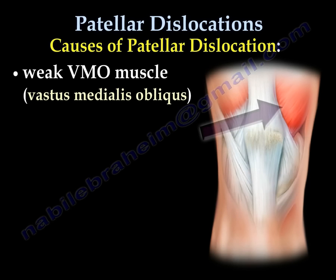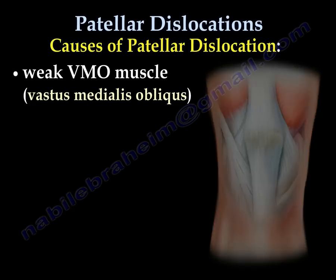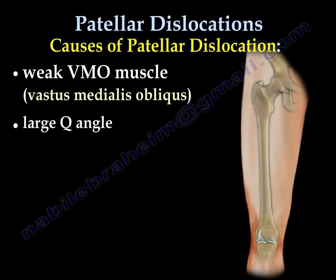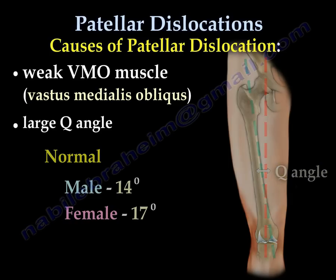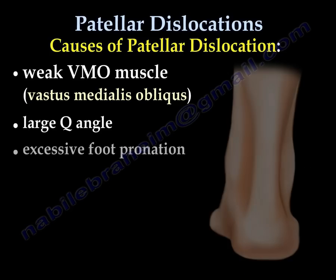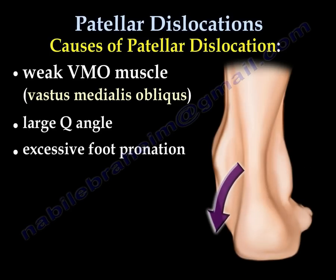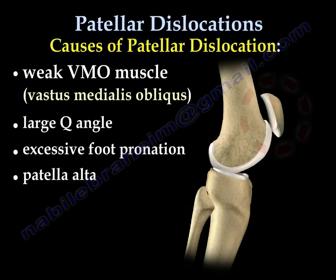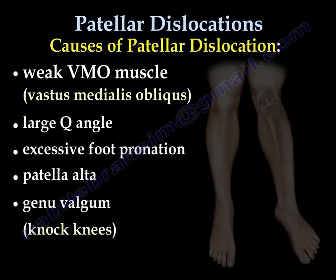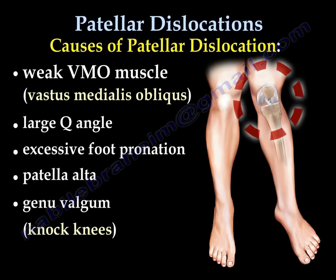Causes of patella dislocation include: weak VMO — the vastus medialis obliquus muscle is weak; large Q angle; excessive foot pronation; patella alta, meaning a high riding patella; and genu valgum, or a knock knee.